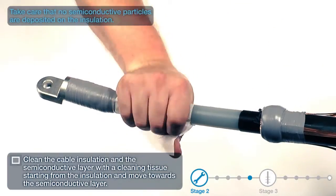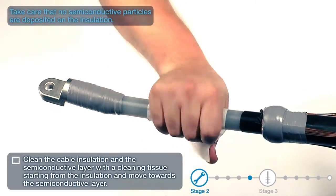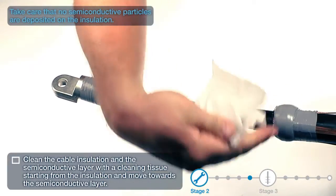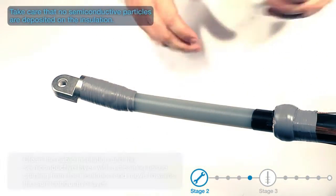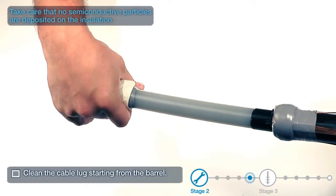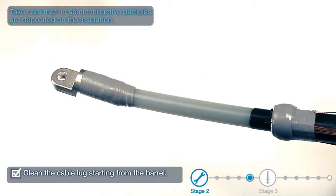Clean the cable insulation and the semi-conductive layer with a cleaning tissue, starting from the insulation and moving towards the semi-conductive layer. Clean the cable lug starting from the barrel. Take care that no semi-conductive particles are deposited on the insulation.